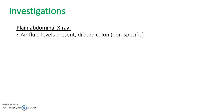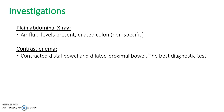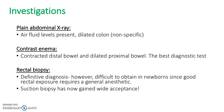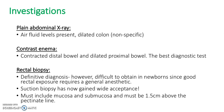What investigations would you do to look at a baby with Hirschsprung's? Normally you do an abdominal X-ray — there'll be air fluid levels present and a dilated colon, though this is nonspecific. You'll also do a contrast enema, which would show a contracted distal bowel and a dilated proximal bowel — this is the best diagnostic test. Rectal biopsy gives a definitive diagnosis; however, it's difficult to obtain in newborns since good rectal exposure requires a general anaesthetic, which can be quite dangerous. Suction biopsy has now gained wide acceptance, but the biopsy must include the mucosa and the submucosa, and must be 1.5 cm above the pectinate line.